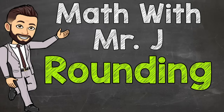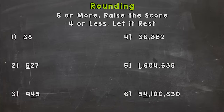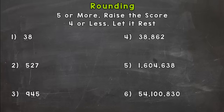Welcome to Rounding with Mr. J. In this video we are going to discuss rounding and the rules of rounding. As you can see on your screen, you have six numbers that we are going to round to the underlined digit. You should have something to write with and write on, whether it's a pencil and paper, a mini whiteboard and a marker, or whatever you have available — you should write these out with me.